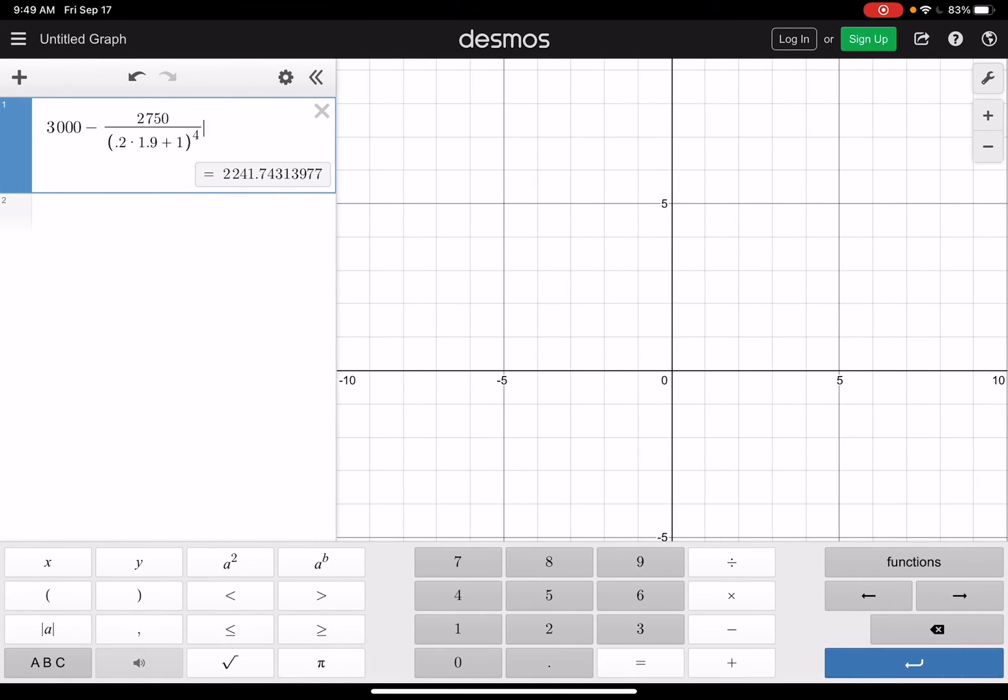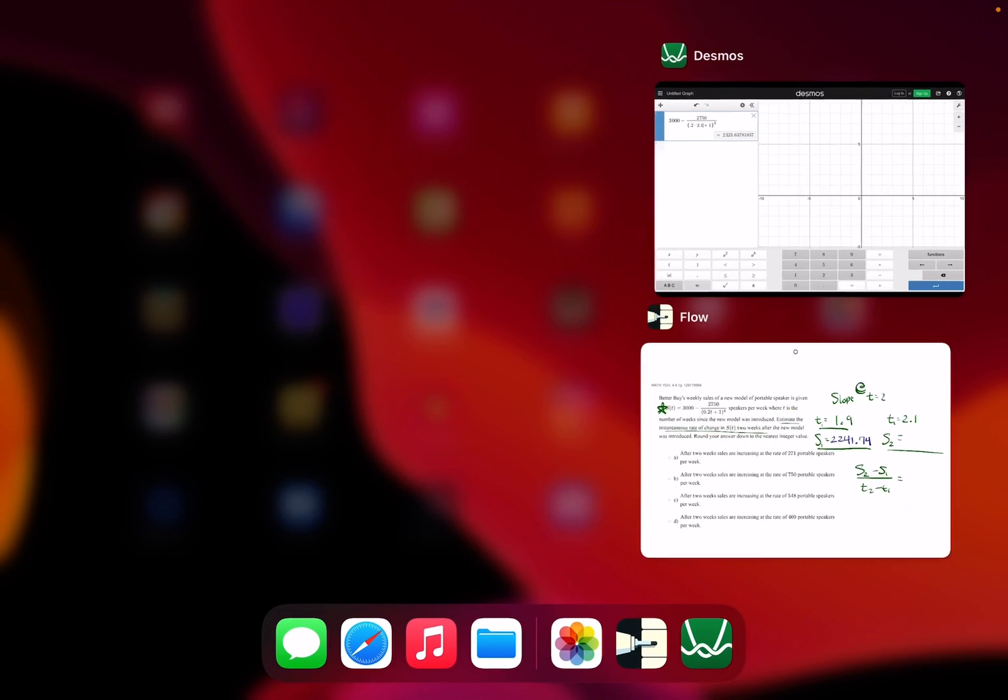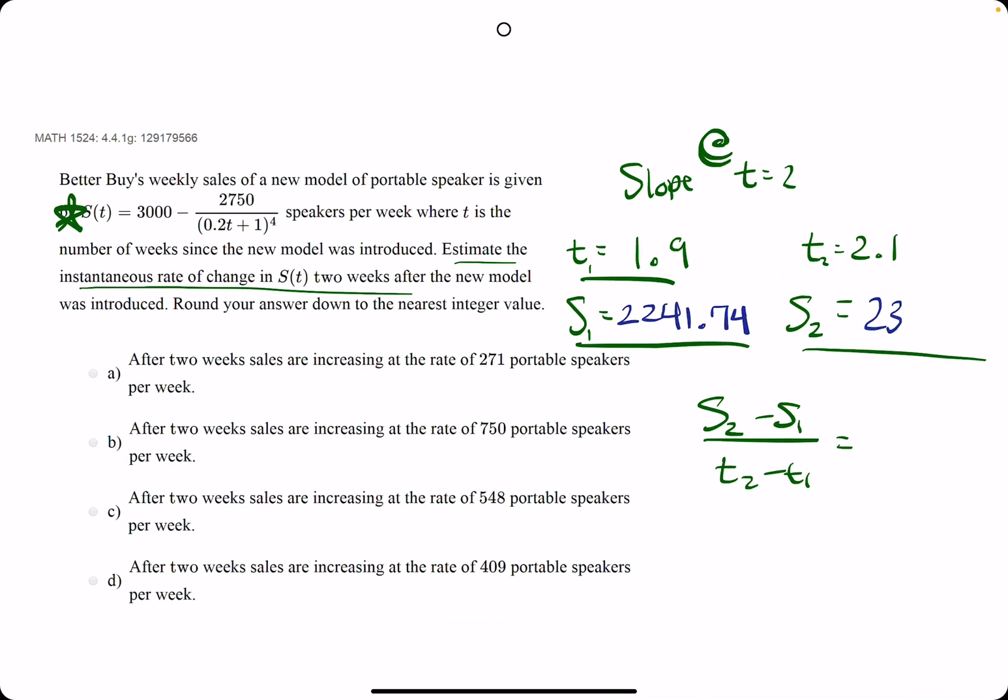Then we'll plug in the other t value, 2.1. So I'll just replace 1.9 with 2.1. We get 2323.64.